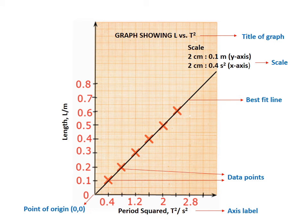So here is a typical simple pendulum graph. And you are seeing the different features. There, the title of the graph is graph showing length versus period squared. It's usually placed at the top of your graph. Then you have your scale. You want to be specific as to what is the scale for each of your axes.